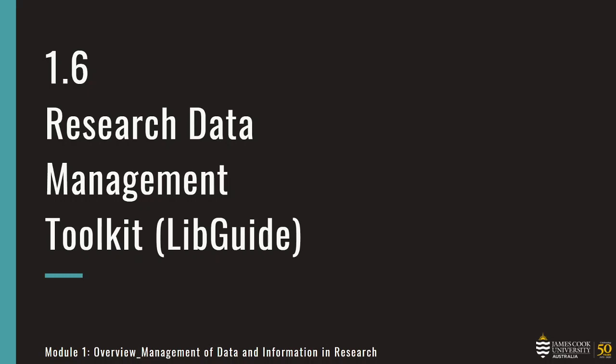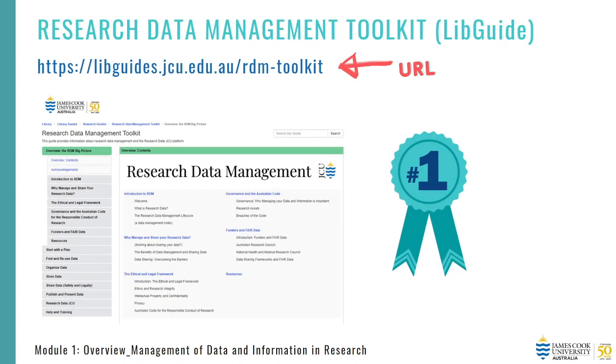The library at JCU has several research guides that provide targeted information on a particular topic to support students and staff. We have a research data management toolkit as our libguide at JCU, which provides information about research data management and also about the Research Data JCU platform. All the information you've just listened to is directly from the research data management toolkit, and it is the number one resource you should consult.